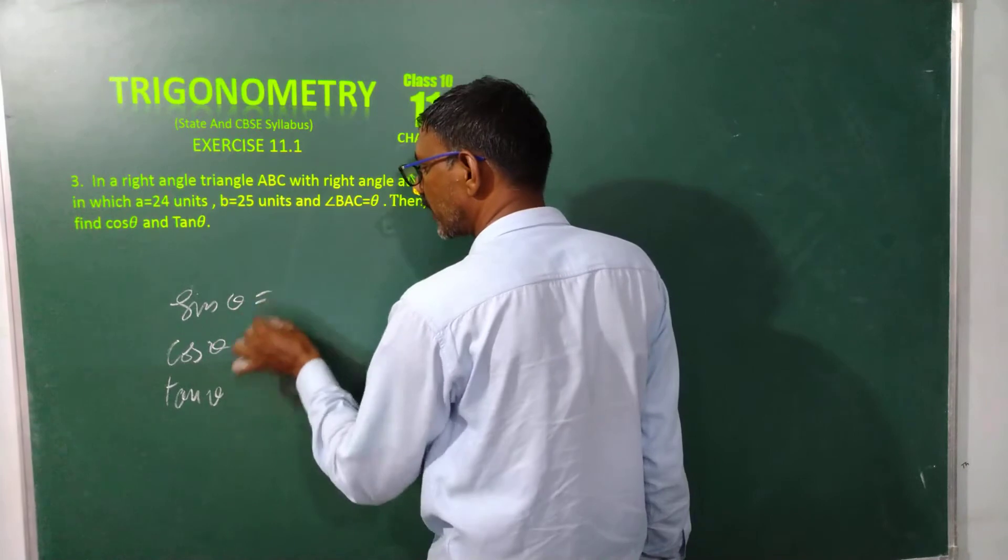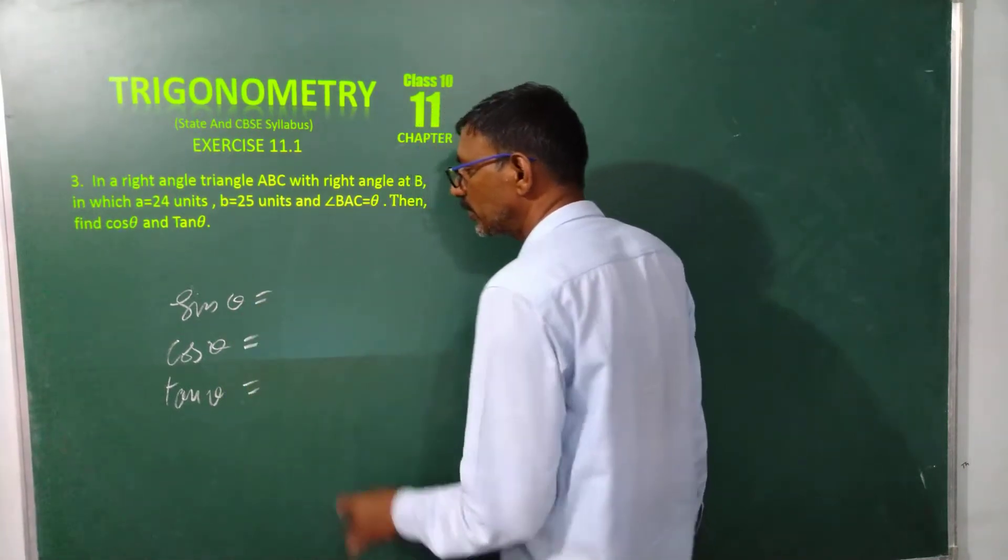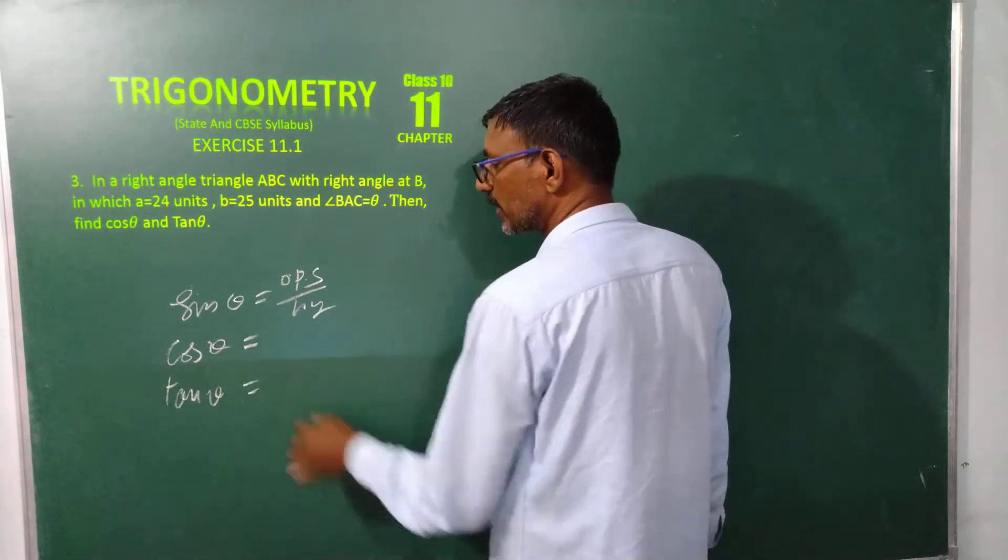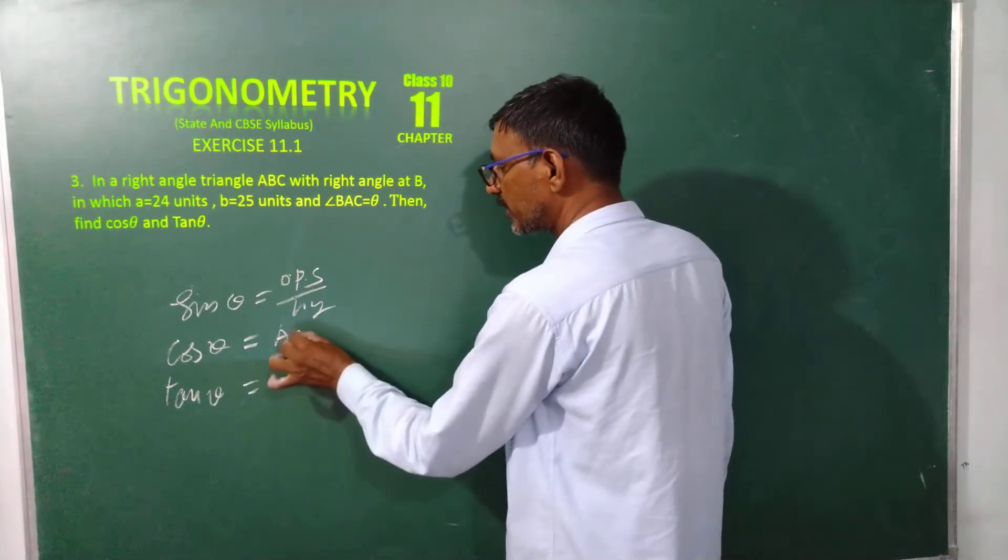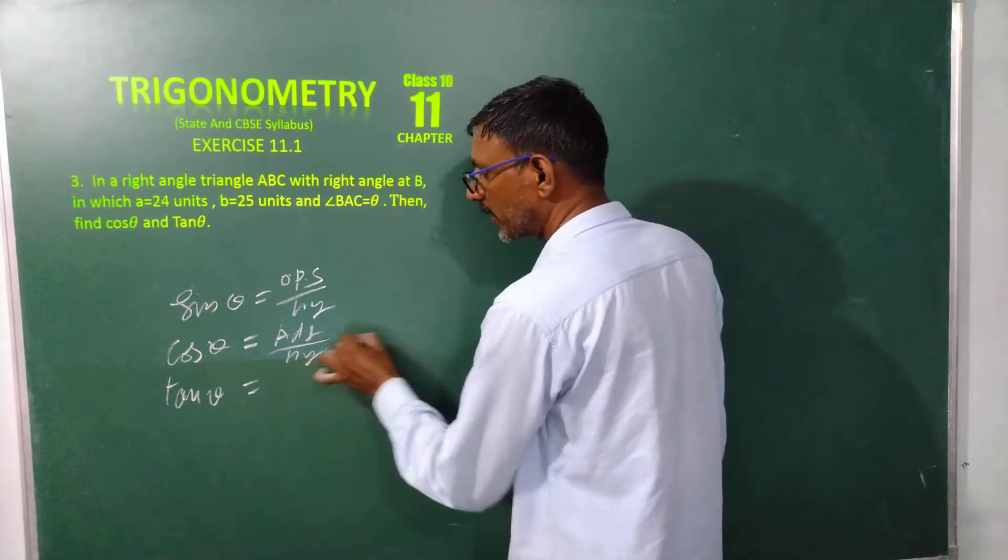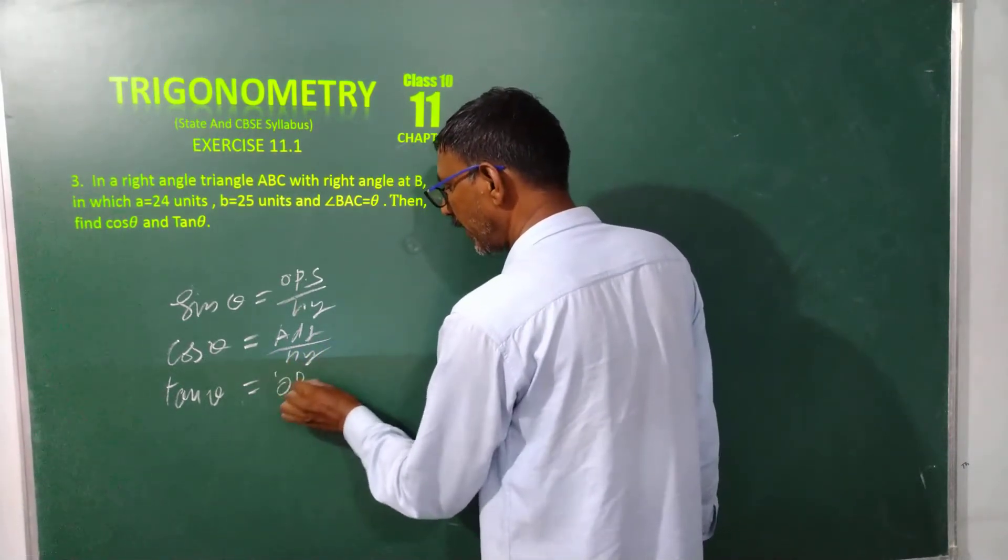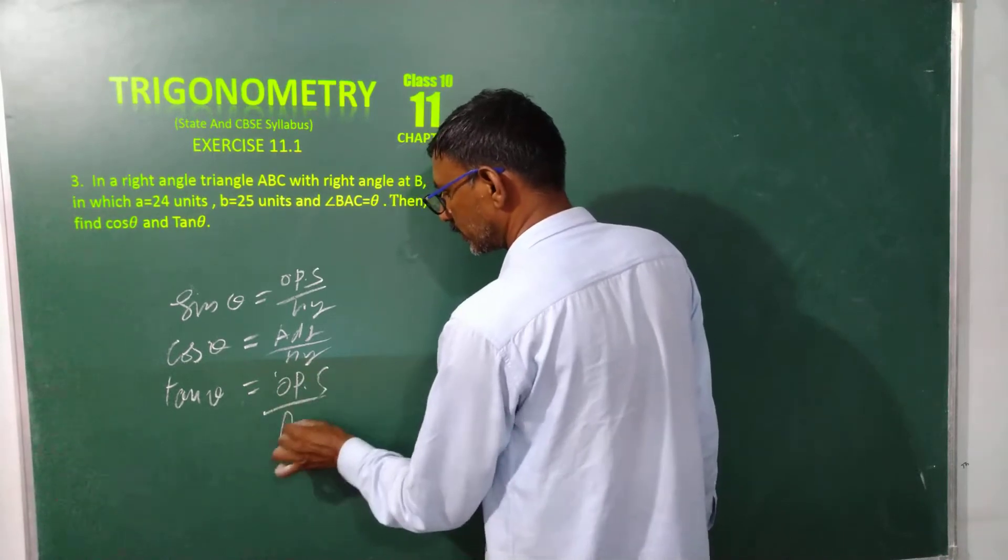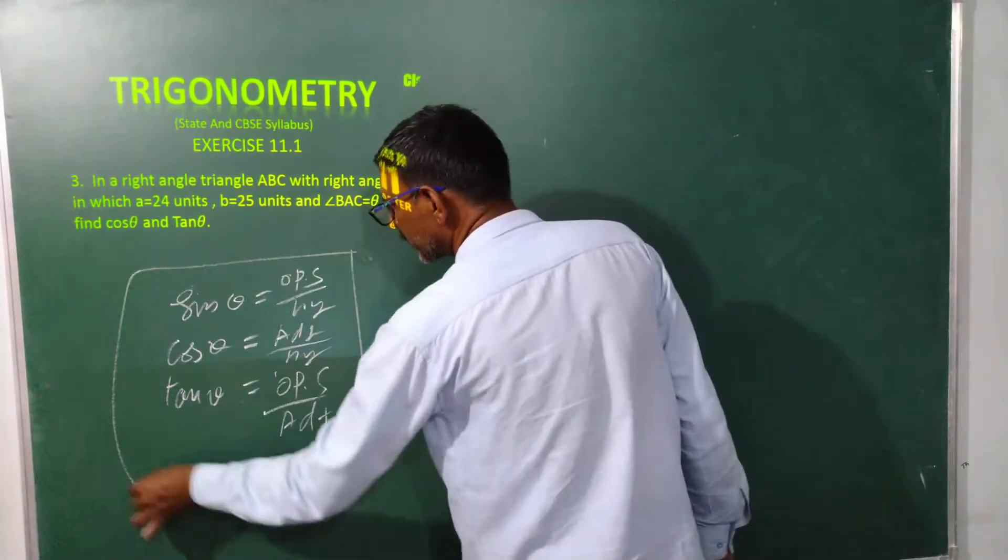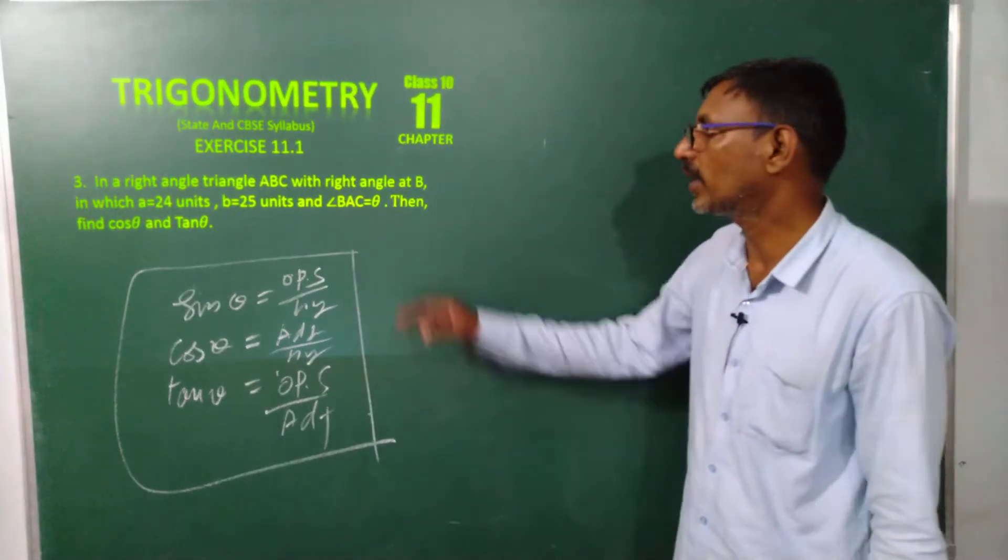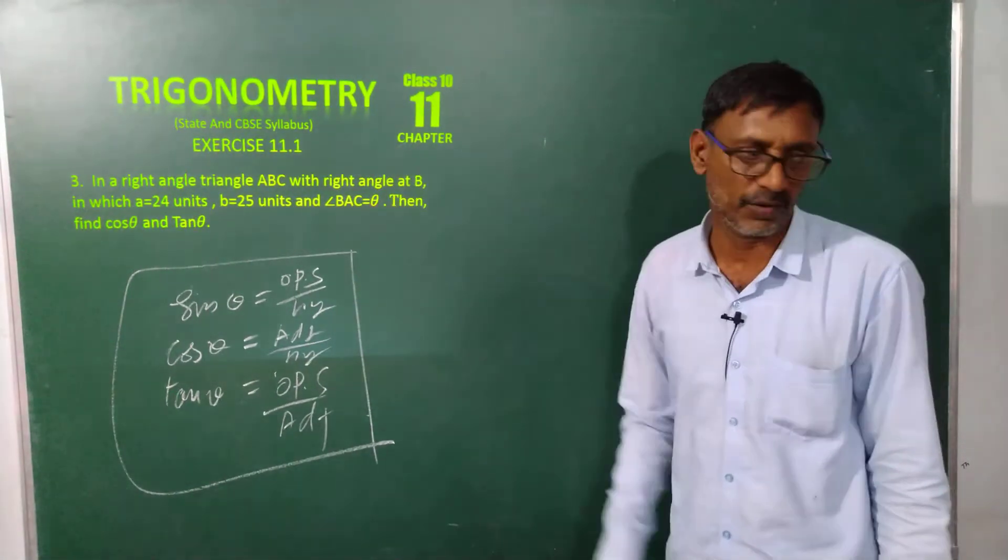We already discussed about this one and this one. This one we can write opposite side by hypotenuse. Cos - adjacent side by hypotenuse. Tan - opposite side by adjacent side. So using these three ratios, we can do every problem from the exercise level of 11.1.